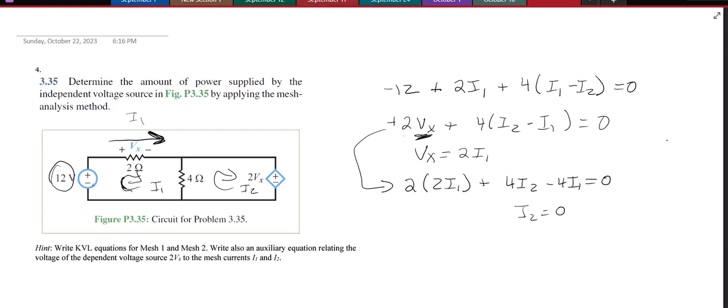Okay and then to find I1 I can plug into my other equation right here. So minus 12 plus 2I1 plus 4I1 equals zero, or 6I1 equals 12, or I1 equals 2 amps.